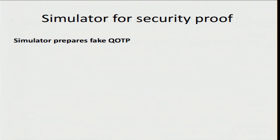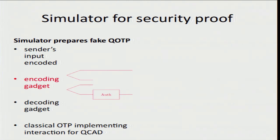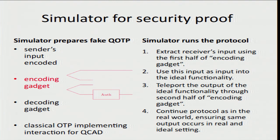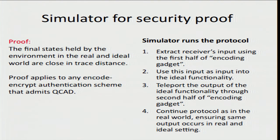To show security, we construct a simulator that can emulate a correct quantum one-time program without access to the sender's input, using only a single call to the ideal functionality. The key idea is that the simulator prepares a fake quantum one-time program that's mostly the same as the original but with a special encoding gadget that allows the simulator to extract the receiver's input using teleportation. The simulator puts that input into the ideal functionality and teleports the result back into the encoding gadget, then continues the protocol as in the real world — doing careful work to ensure the same output occurs in both the real and ideal settings. In the end, the final states in both cases are close in trace distance, and our proof applies to any encode-encrypt-and-authenticate scheme that admits computing on authenticated data.